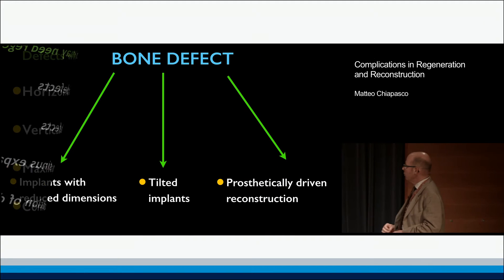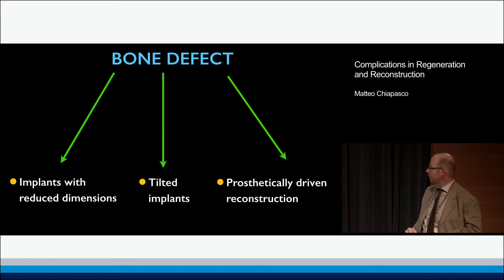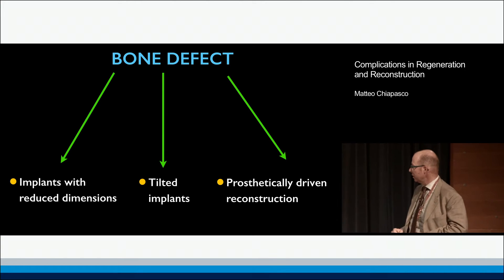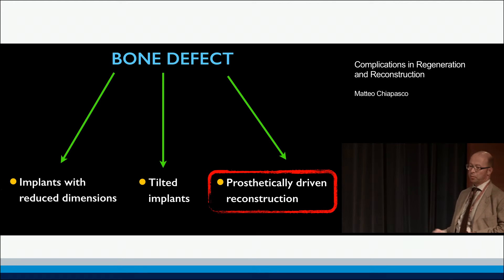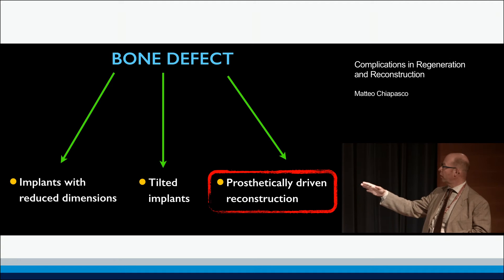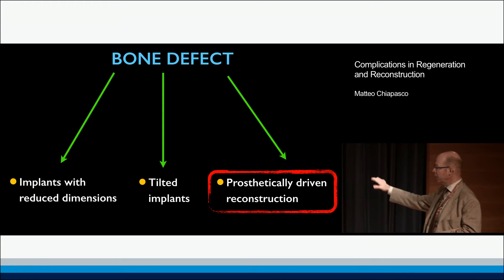When we have a bone defect, to summarize briefly, the alternatives are represented by implants with reduced dimensions or tilted implants. But I always try to aim for the last option, which is a prosthetically driven reconstruction — that is my favorite. Of course, I cannot ignore small diameter or short implants in selected cases.